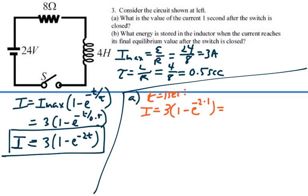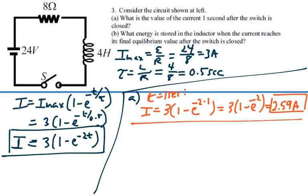And that's equal to 3 times 1 minus e to the negative 2, which, making sure you put in the numbers correctly, that is 2.59 amps. So that is our current at t equal to 1 second.